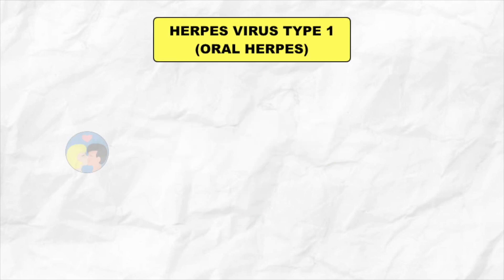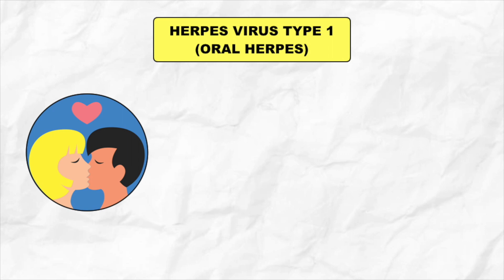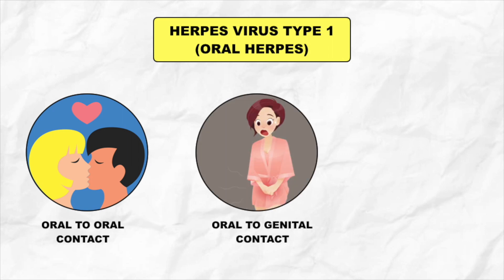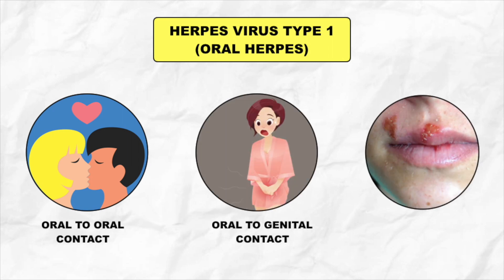Herpes simplex virus type 1, or oral herpes, is mainly transmitted by oral to oral contact and sometimes by oral-genital contact. As the lesions are mainly seen around the mouth and lips, it is called herpes labialis or cold sores.